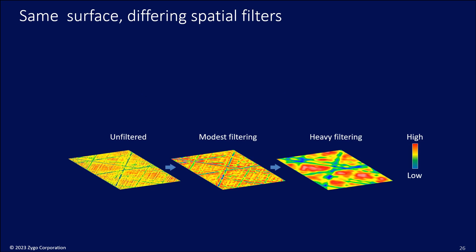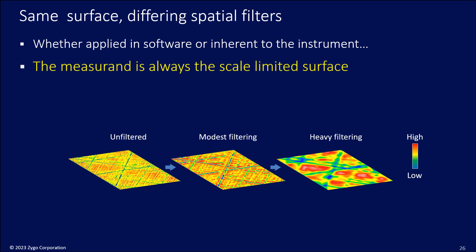So let's take a look at the same surface with different spatial filters. What you see is on the left the quote-unquote unfiltered, which is limited actually by the transfer function characteristics of the instrument, and then some imposed modest filtering and then some heavy filtering. This is the same surface, but we're just looking at it with different filters applied. So what does this tell us? Well, it tells us that whether it's an applied filter in software or something inherent to the instrument, the measurand, the thing that you're measuring is not the surface topography per se, it is the scale limited surface. It is some representation of the surface with scaling limits applied.